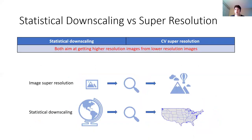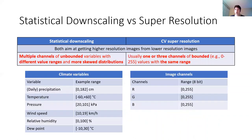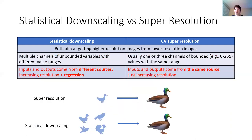Statistical downscaling is very similar to the image super-resolution technique in the computer vision field. If we treat climate variables in an area as images, they both aim at getting higher resolution images from lower resolution images. However, there are some differences. Firstly, there are multiple channels of unbounded climate variables with different value ranges and more skewed distributions in downscaling. Secondly, there's an additional regression problem besides increasing resolution in downscaling, since the inputs and outputs come from different sources.